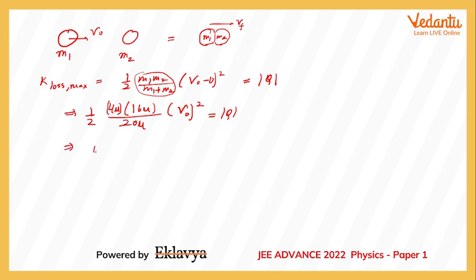This becomes equal to half into 4 AMU. This ratio is 4 by 5. So half into 4 AMU into V0 square into 4 by 5 equals mod Q.